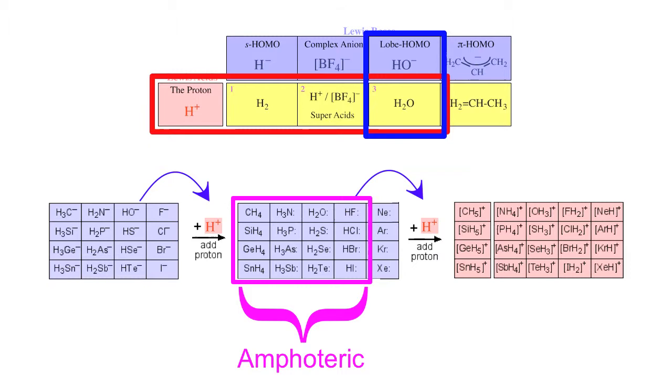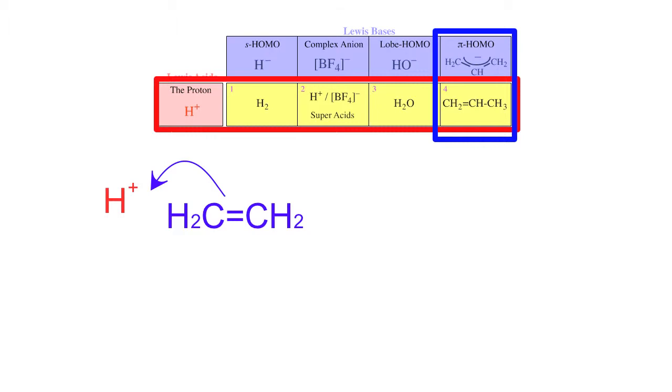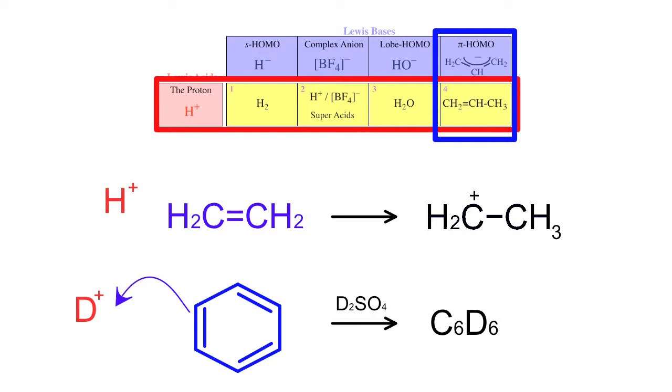Pi HOMO species such as ethene, otherwise known as ethylene, can be protonated to give us carbocations or technically known as carbenium ions. Likewise, benzene can be protonated to give the Wheland intermediate. Benzene reacted with deuterosulfuric acid can be converted into hexadeuterobenzene.